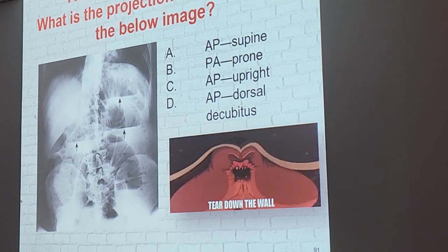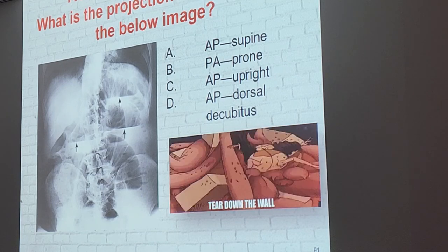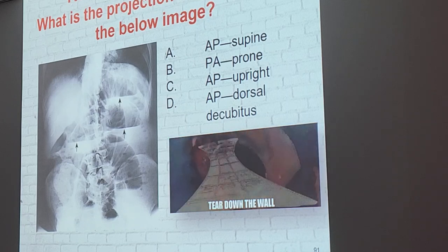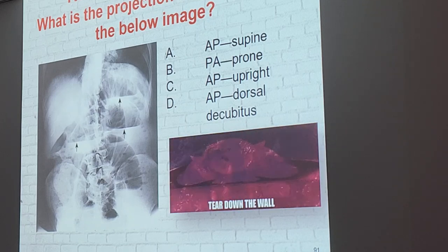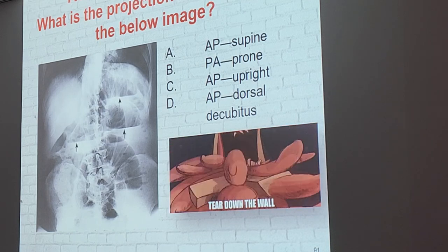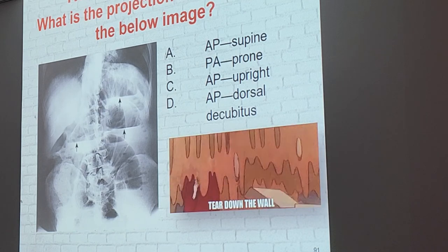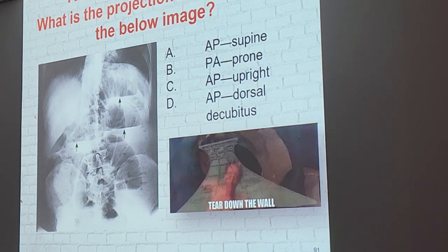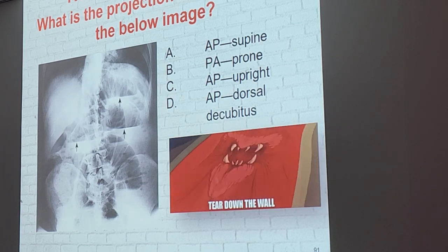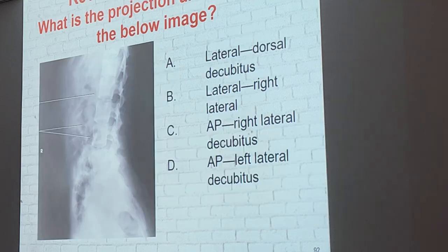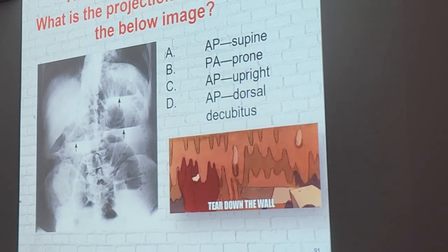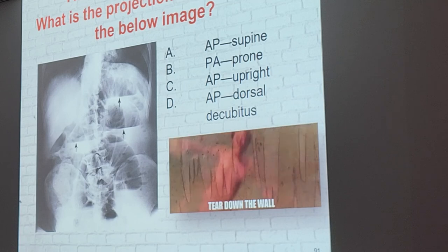Why is one of the options not a decubitus? There's no arrow marker and the image is not sideways. Sideways presentation also indicates a decubitus, because that's how we present them to the radiologist. So that image is an AP upright abdomen.